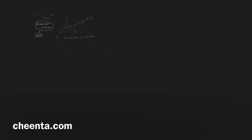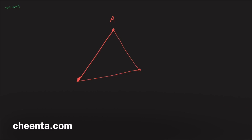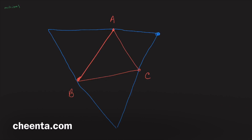Continuing — we want to find a point F that minimizes FA plus FB plus FC. We start with triangle ABC and construct equilateral triangles on the three sides of ABC — using three colors — on sides AC, BC, and AB. Let's name the new points: this one is D, this is E, and this is F.